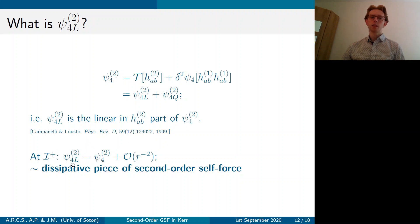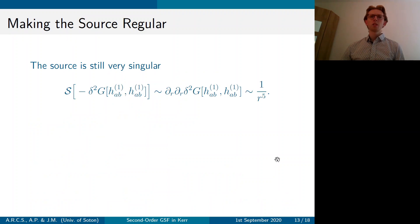psi 4 L2 is the same as psi 4 2. And this means it contains the same information about the gravitational waves being emitted from the system. So we think from that you can derive the dissipated piece of the second order self-force. And unlike psi 4 2, psi 4 L2 has the useful property of being infinitesimal tetrad rotation invariant. And this is akin to local Lorentz invariance and it's useful for comparing results.